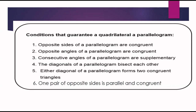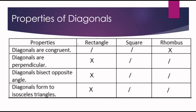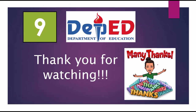I hope you understand today's lesson. Just to clarify: the six general conditions are true for all parallelograms — rectangles, rhombuses, and squares. But some diagonal properties are not true for all three. Congruent diagonals apply to rectangles and squares. Perpendicular diagonals, bisecting opposite angles, and forming isosceles triangles apply to rhombuses and squares. That's it for today — thank you for watching.